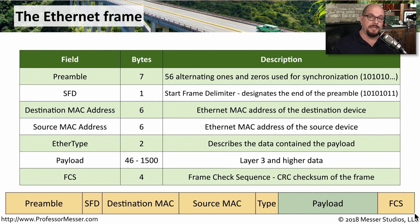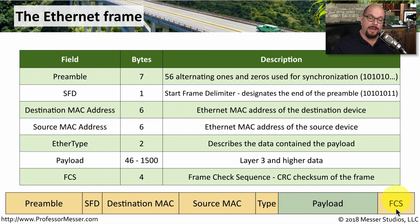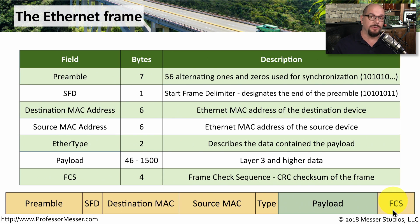Lastly is the frame check sequence, which is part of every ethernet frame that goes across the network. The frame check sequence is a CRC checksum that looks at all the data sent in the ethernet frame and produces a single checksum. When your device receives this frame, it calculates the frame check sequence in exactly the same way the original device did and compares it to what's inside the frame. If they match, the frame was received correctly. If not, something was corrupted along the path, your ethernet card will drop the frame, and it will increment a CRC error counter.